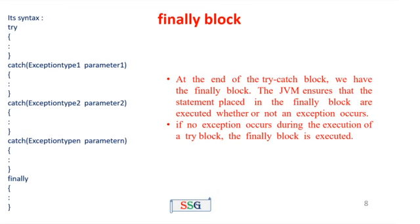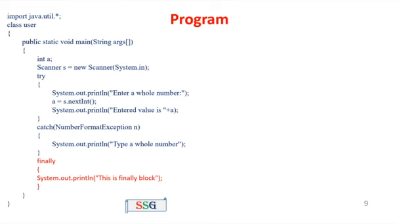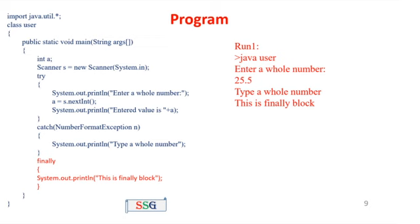If no exception occurs during execution of the try block, the finally block is also executed. Example: import java.util.*, class User, public static void main, Scanner s = new Scanner(System.in). In the try block: System.out.println 'enter the whole number', a = s.nextInt(), and 'entered value equals a'. Catch block: NumberFormatException — 'type a whole number'. Finally block: System.out.println 'this is finally block'. First run: java User — enter the whole number — input 25.5 (a double). NumberFormatException is raised, third line skipped, catch block executes 'type a whole number', and then the finally block executes: 'this is finally block'.